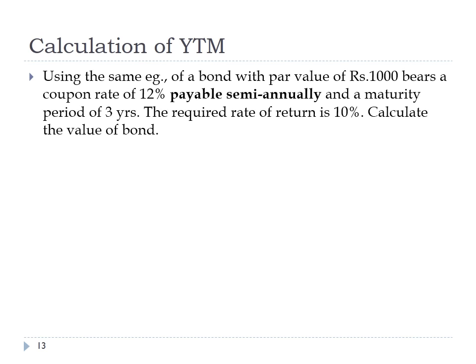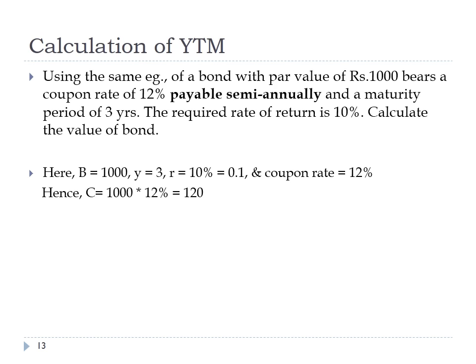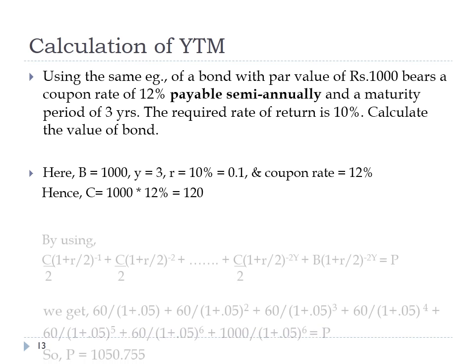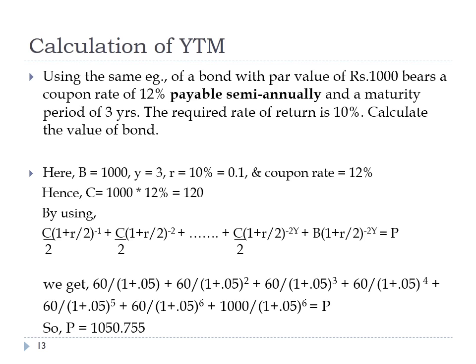Taking the previous example with semiannual coupon payments: B = 1000, C = 120, y = 3, r = 0.1. Substituting into the modified equation: 60/1.05 + 60/1.05² + ... + 60/1.05⁶ + 1000/1.05⁶ = P, which gives P = rupees 1050.755. This clearly shows that the value of bonds with semiannual interest is higher than those with annual interest.